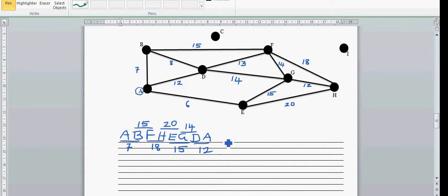Add the numbers up. If we add them up, 15 plus 7 is 22, 20 plus 18 is 38, 14 plus 15 is 29 and 12. This is 101. So now the problem is, can we find a better way to go to all the points and reduce the time?